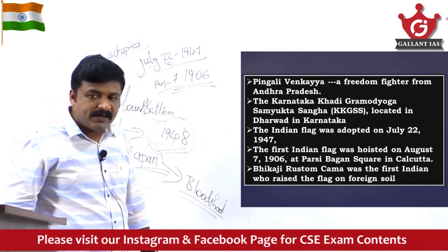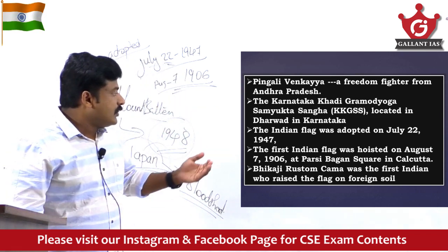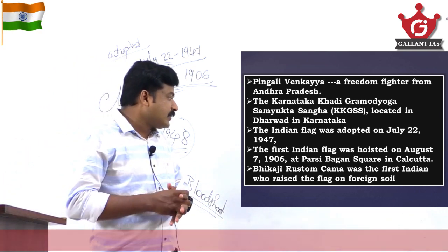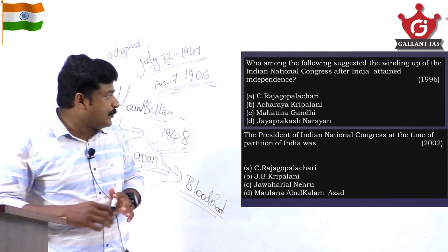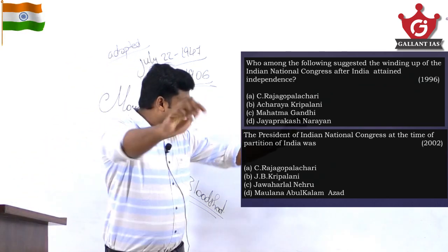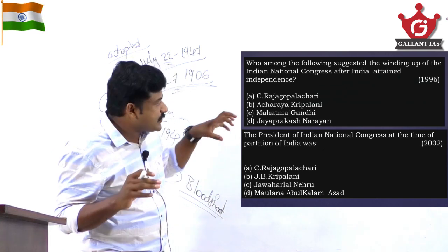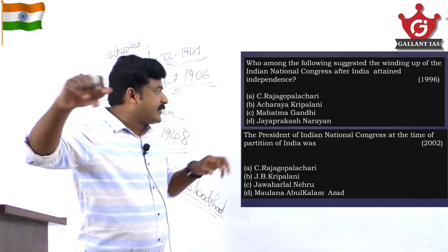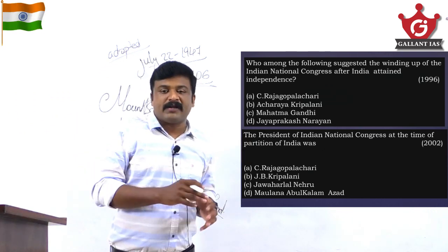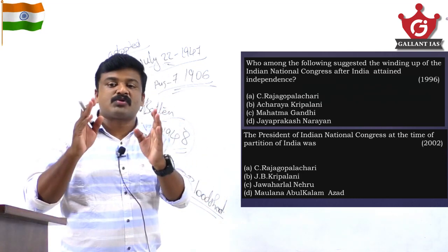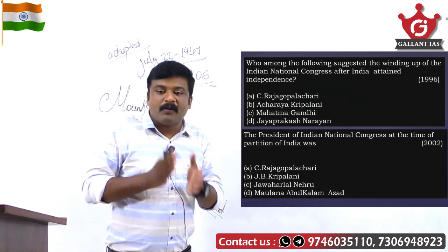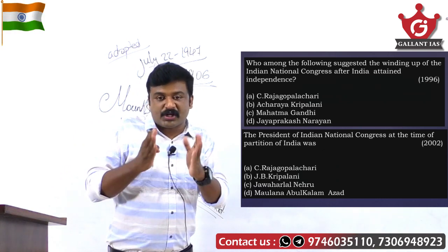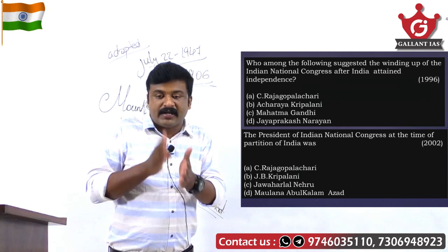The exact date and year UPSC may not ask, but these facts you should register in your mind. Madam Bhikaiji Cama was the first Indian to raise the Indian flag on foreign soil — in Germany. Now solving a previous year question: 'Who among the following suggested winding up of the Indian National Congress after India attained independence?' The answer is Mahatma Gandhi — it was Gandhi who opined that Congress must be disbanded since its goal, freedom of the nation, was achieved. Also, the Radcliffe Committee — a boundary commission — with Cyril Radcliffe as chairman, demarcated the boundary line between India and Pakistan.